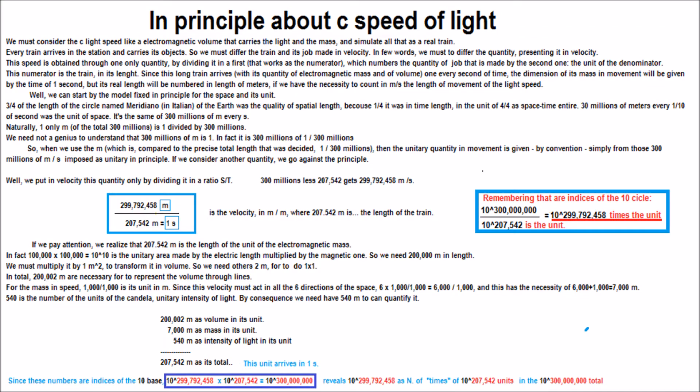In principle about c speed of light, we must consider the c light speed like an electromagnetic volume that carries the light and the mass, and simulate all that as a real train.